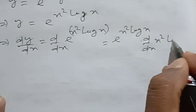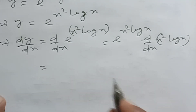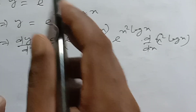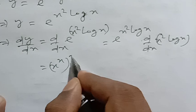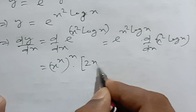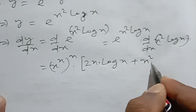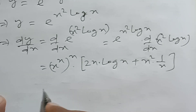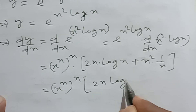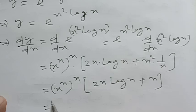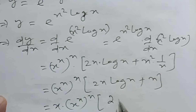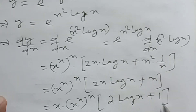Since e^(x² · log x) = y = x^(x²), we get dy/dx = x^(x²) times derivative of x² · log x, which equals x^(x²) times [2x · log x + x² · (1/x)] = x^(x²) times [2x log x + x]. Taking x common: dy/dx = x · x^(x²) · (2 log x + 1). This is the final answer.